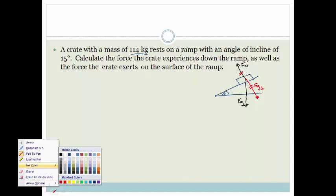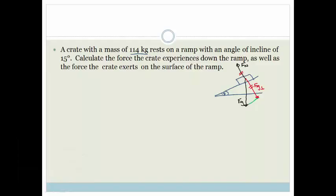And then there is the component of the force of gravity that pulls it down the slope. This is Fg parallel. They've asked us to calculate the force the crate experiences down the ramp, so that's the force of gravity parallel. Because this is perpendicular and that is parallel, we know that has to be 90 degrees. This angle here is the same as this angle here, so that angle is 15 degrees.